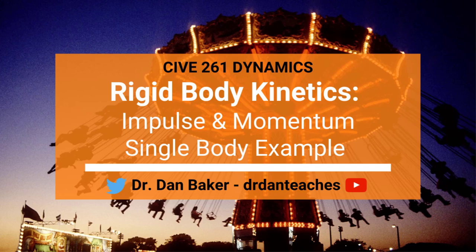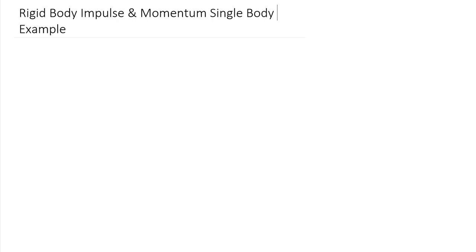Hello students of Dynamics, this is Dr. Dan Baker with an example problem focused on rigid body impulse and momentum. This is a kinetics topic relating motion and forces. This is a simplified example with just one single body, which makes our computations easier than if we had multiple bodies where we'd need to add together all the impulse and momentum from various bodies.